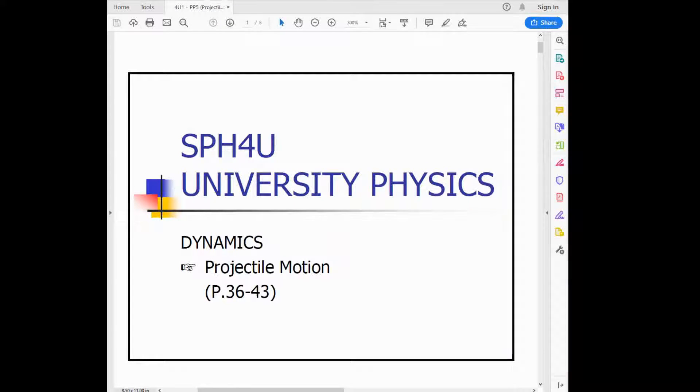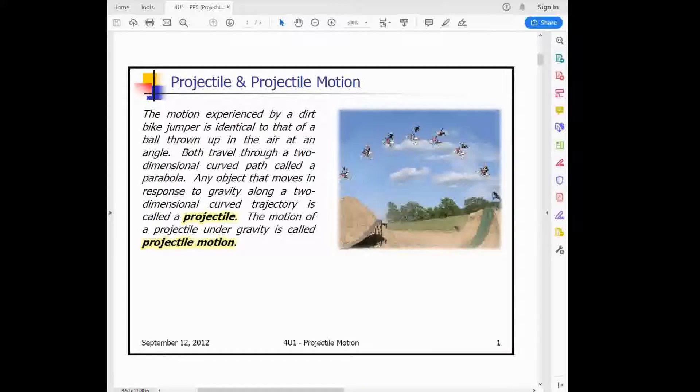The next lecture is on projectile motion. This is section 1.5 in your textbook. When we talk about projectile motion, we're talking about when an object moves through the air. Any object that moves horizontally while experiencing a gravitational force will have a parabolically curved trajectory.